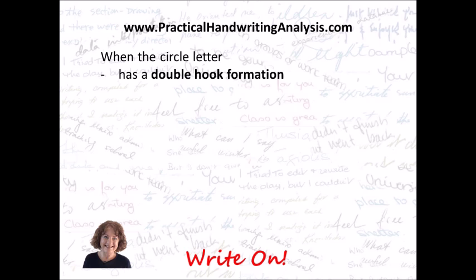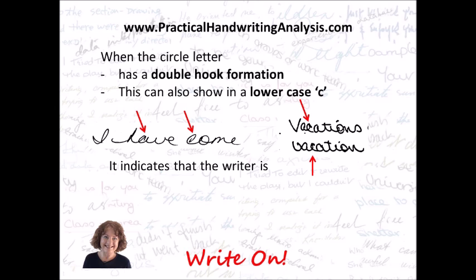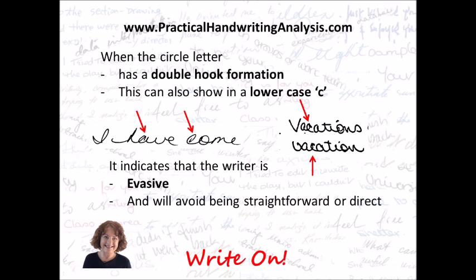When the circle letter has a double hook formation — this can also show in a lower case C — there are two examples with the double hook formation: one in the C and one in the A. This indicates that the writer is evasive; they'll avoid being straightforward or direct.